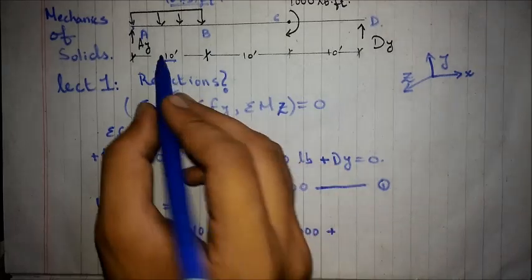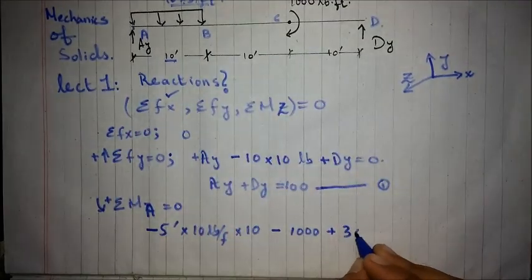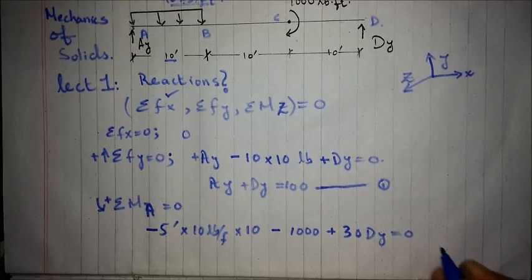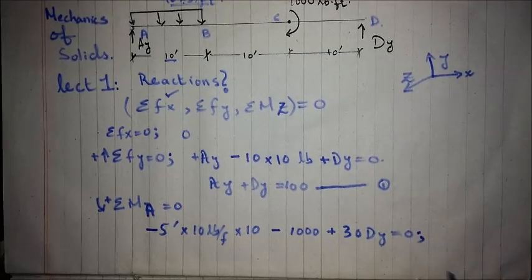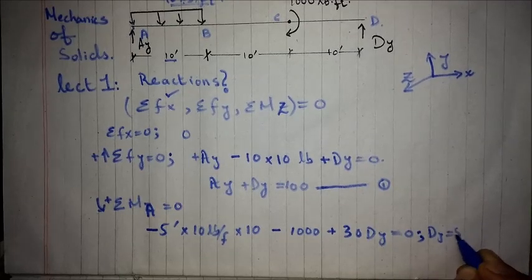Plus, the distance is 30 times dy. This equation will give us the reaction dy as dy is equal to 50 pounds.